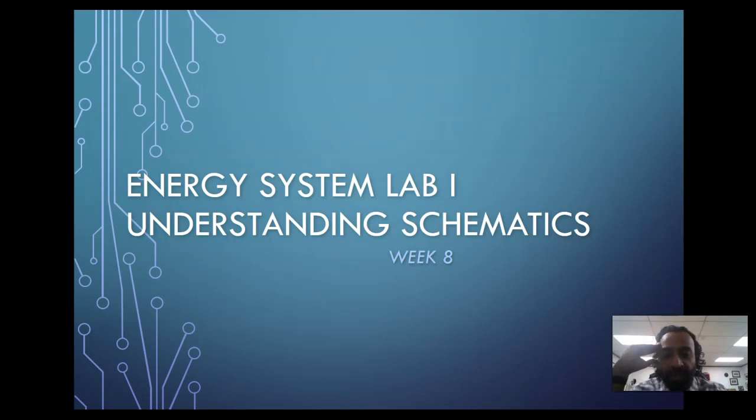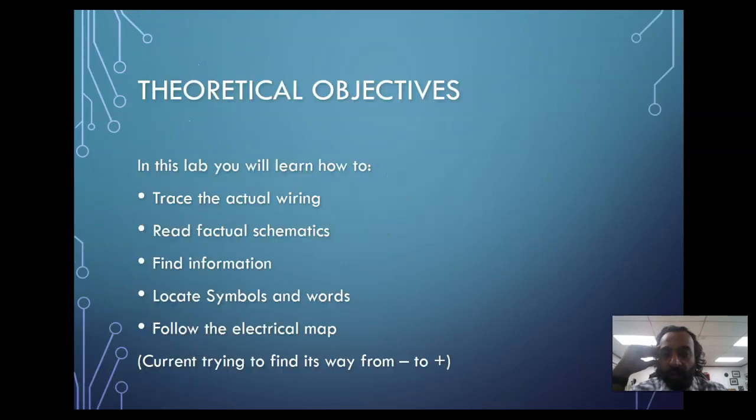The theoretical objectives of this lab: you will trace actual wiring on a control and learn how this control actually transfers into schematics. We'll get a piece of equipment and use that equipment to do schematics. You'll read factual schematics, and there's a difference between factual and ladder schematics. We'll also find information about what the components are, what they look like, and what they mean.